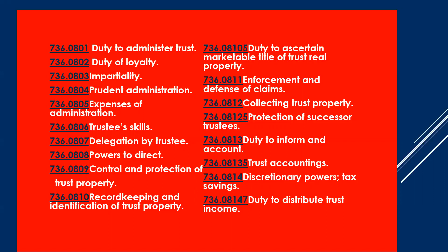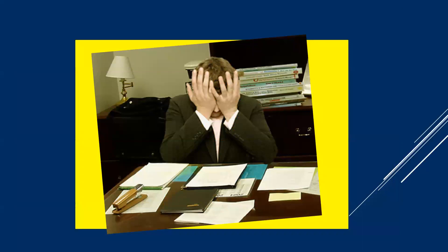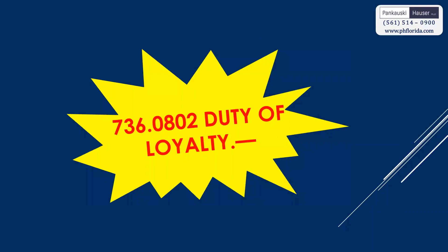Probably two of the most important duties are the duty to inform and to account, and to provide trust accountings — Florida Trust Code 736.0813 and 736.08135. These are widely and repeatedly misunderstood by individuals serving as trustee. The most common example is a trustee who refuses to provide basic relevant information about the sale of real property that was a trust asset — for instance, refusing to send the HUD-1 to a beneficiary, or making documents available only at the trustee's office when the beneficiary lives 3,000 miles away.